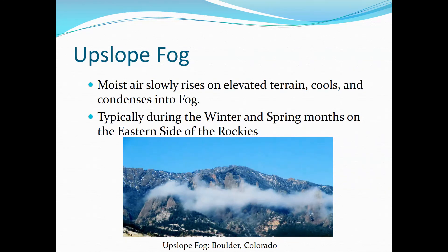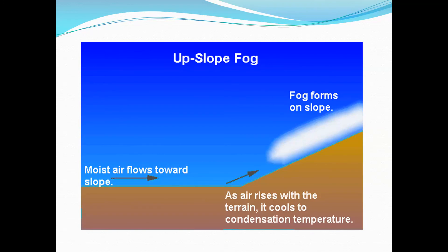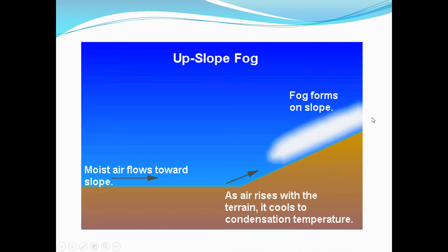The last type of fog is upslope fog. In this case, air near the surface is simply pushed up and over a mountain. As the air rises up the mountain, it expands, cools, and condenses, forming fog. You have warm, moist air near the surface, and as it hits the mountainside, it rises up and condenses into fog. This is very common on the windward side of mountains - that's the side where air is blowing towards the mountain. The other side is called the leeward side.